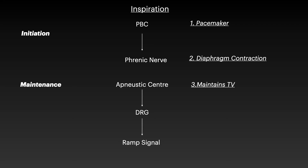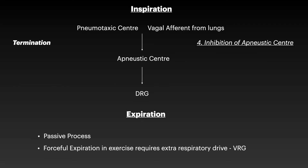Once inspiration is sufficient, it needs to be terminated. Two mechanisms are responsible: the pneumotaxic center and vagal efferents from the lungs. The lungs send vagal fibers to the apneustic center and inhibit it. Since the apneustic center was stimulating the DRG, its inhibition stops the ramp signal, halting inspiratory activity. When inspiration stops, expiration follows — and again, expiration is normally a passive process. Only during forceful expiration does the VRG provide the extra respiratory drive.